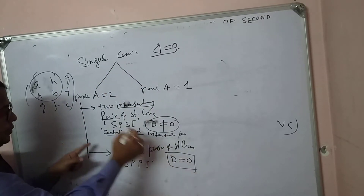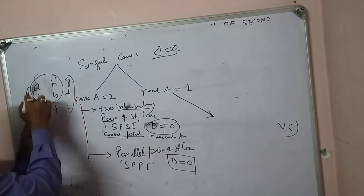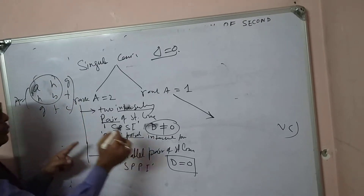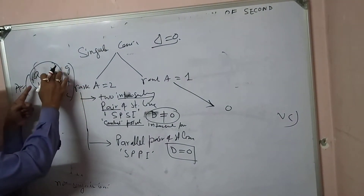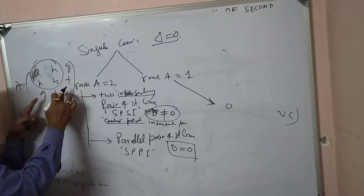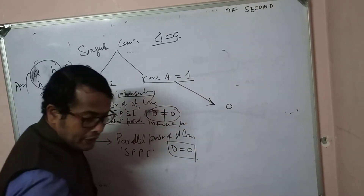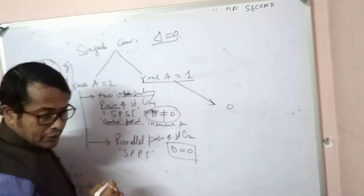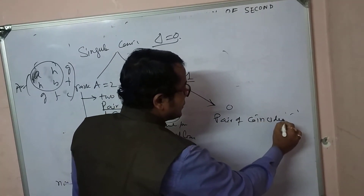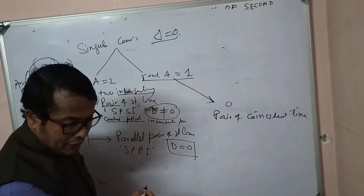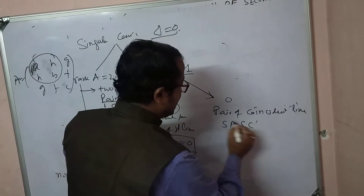When the rank of matrix A is 1, all second-order minors of A will be zero. This means the three rows of the matrix are not independent — only one independent row exists. In this case we get a pair of coincident lines, designated SPSC.